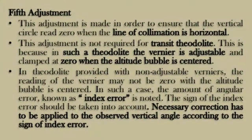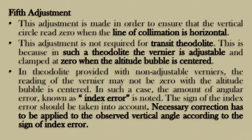The fifth adjustment is to ensure that the vertical circle reads zero when the line of collimation is horizontal. These adjustments are not required in transit theodolites because we have to adjust the vernier and set it to zero. But in cases of non-transit theodolite with non-adjustable verniers, we need to make zero corrections and apply the correction to the vertical angle.